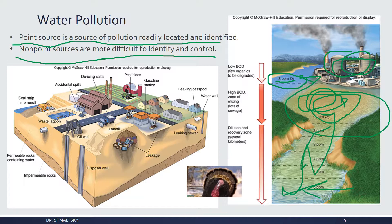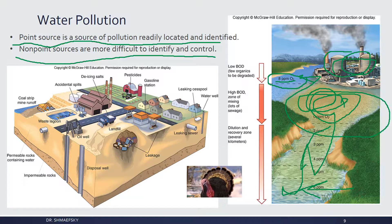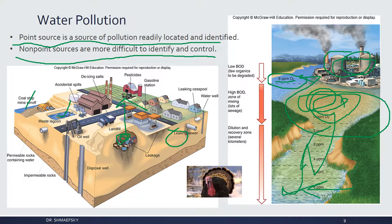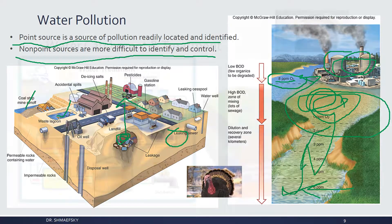Point source pollution is easy to spot, penalize, and control. Non-point source is almost impossible to control — how do you regulate every household? Water pollution can enter man-made lagoons, disposal wells, rivers, or soil, becoming not just a water pollutant but a soil pollutant too. When stored in ditches and landfills, certain water pollutants can evaporate and become an air pollution issue as well.